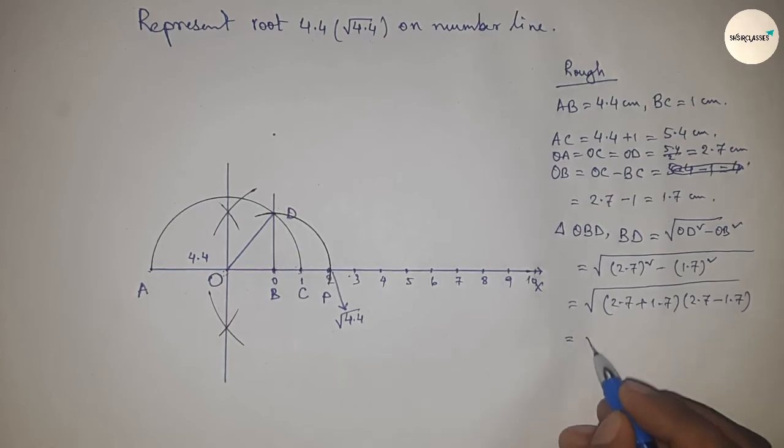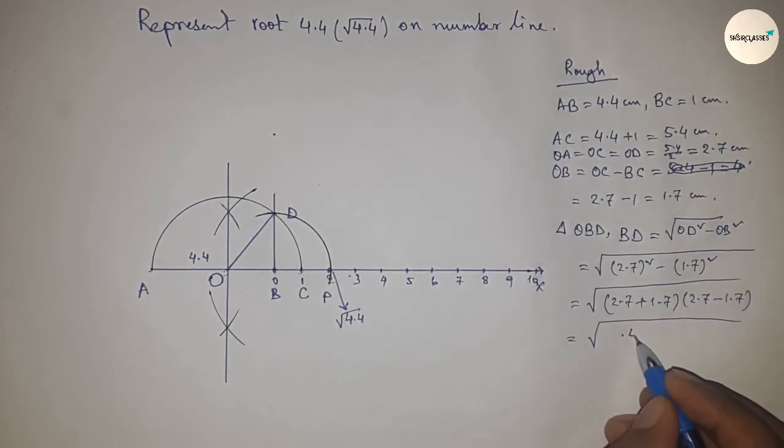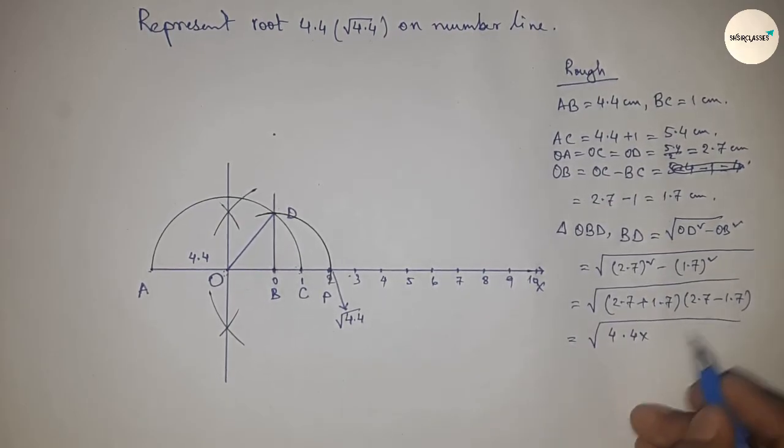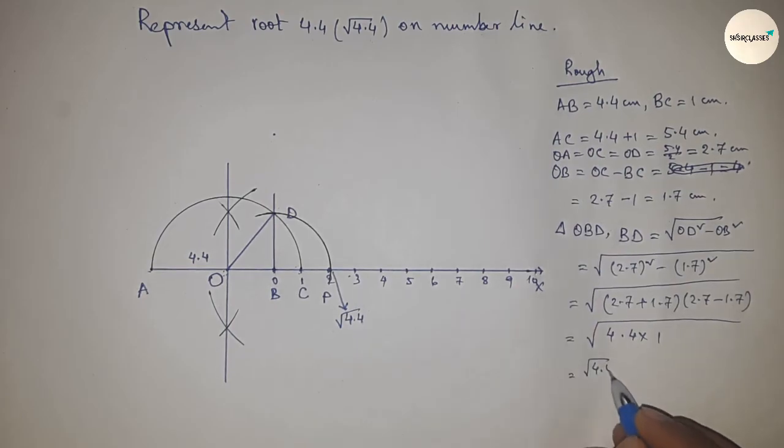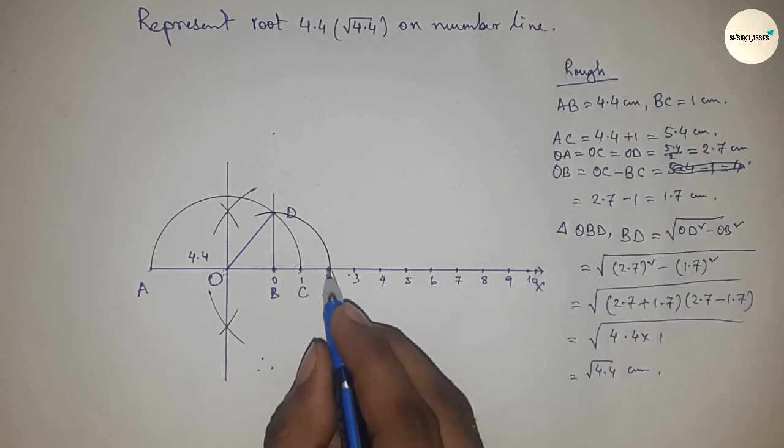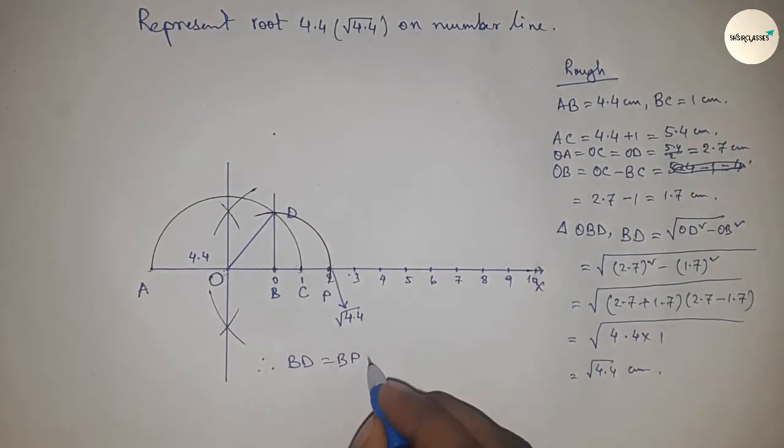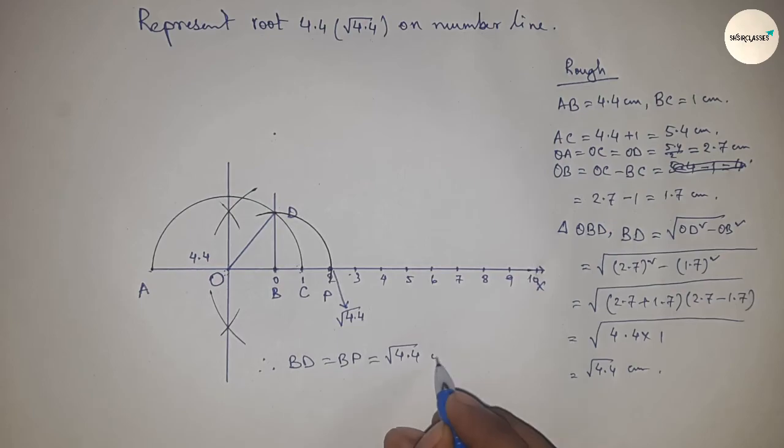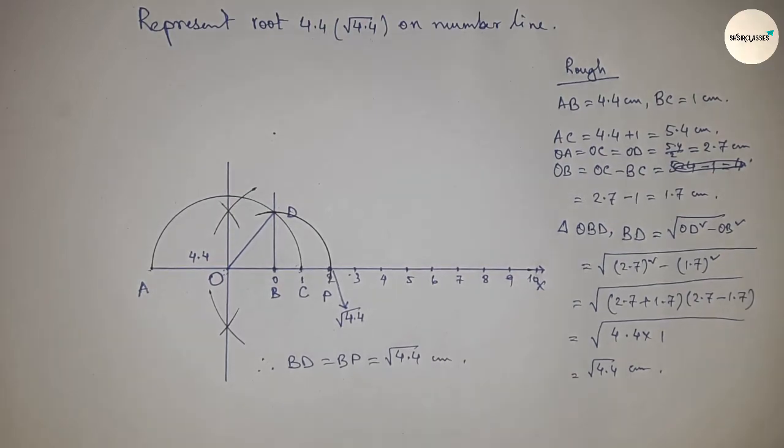Now applying the formula A square minus B square, so from this, this is root 4.4 into 1, so this is root 4.4 centimeter. Therefore, distance BD and BP are equal, so root 4.4 centimeter.